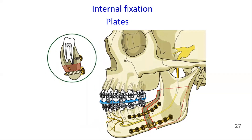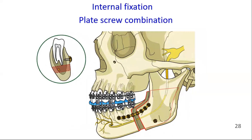For additional stability, a second mini plate can be added close to the inferior border of the mandible using bicortical screws. A combination of a single plate and a positioning screw as an anti-rotation screw is also possible. This improves stability against rotational forces.